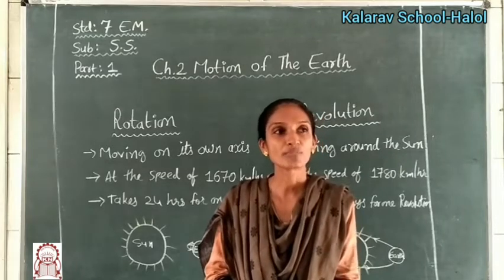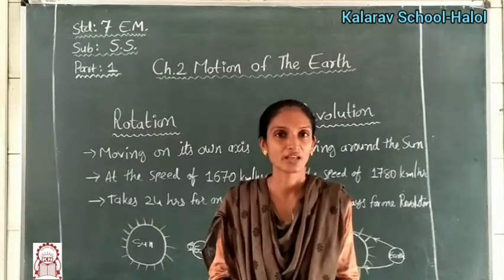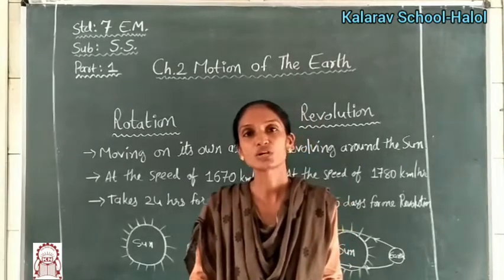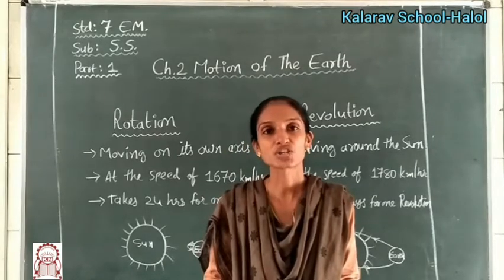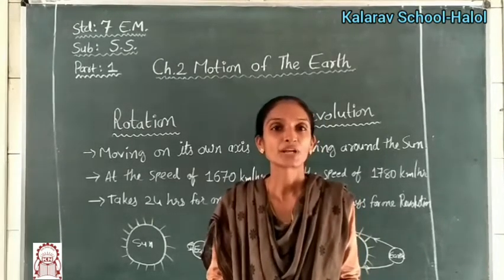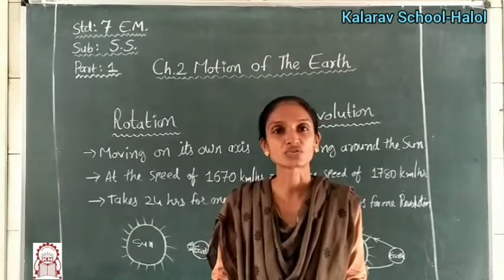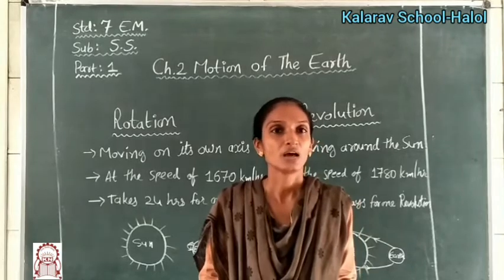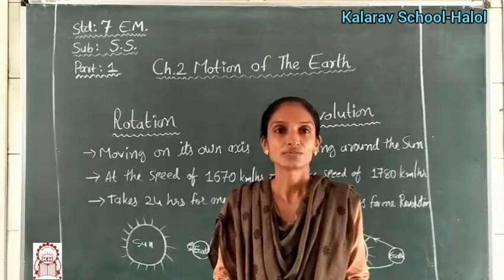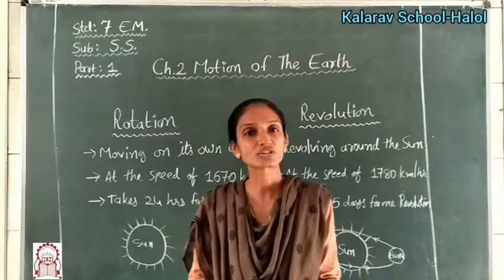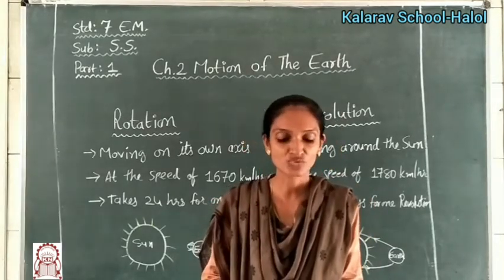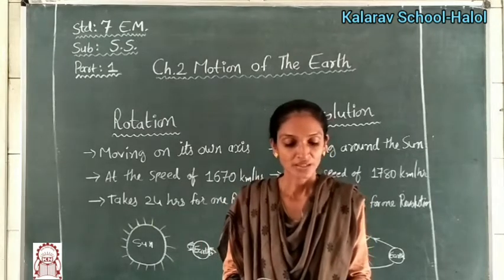You can observe shadows to understand earth's motion. In the morning, the sun rises in the east direction, so you will see a long shadow in the west. In the afternoon, the shadow is shortest. In the evening, when the sun sets in the west, you will again see a long shadow. This activity is described in the textbook on page 8.